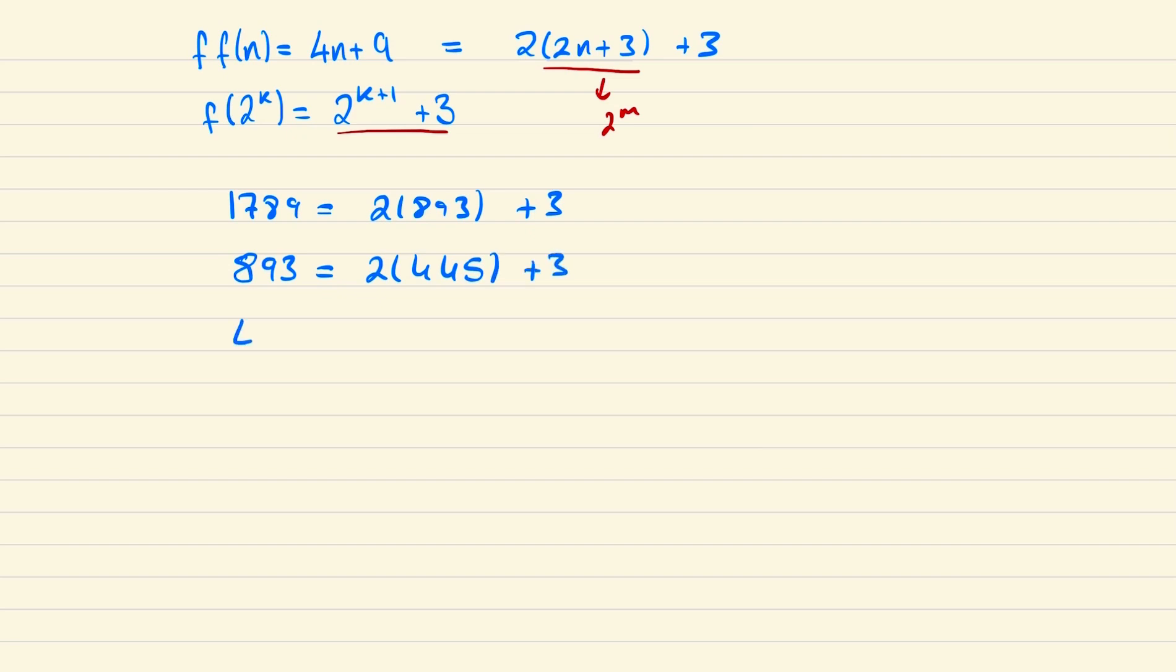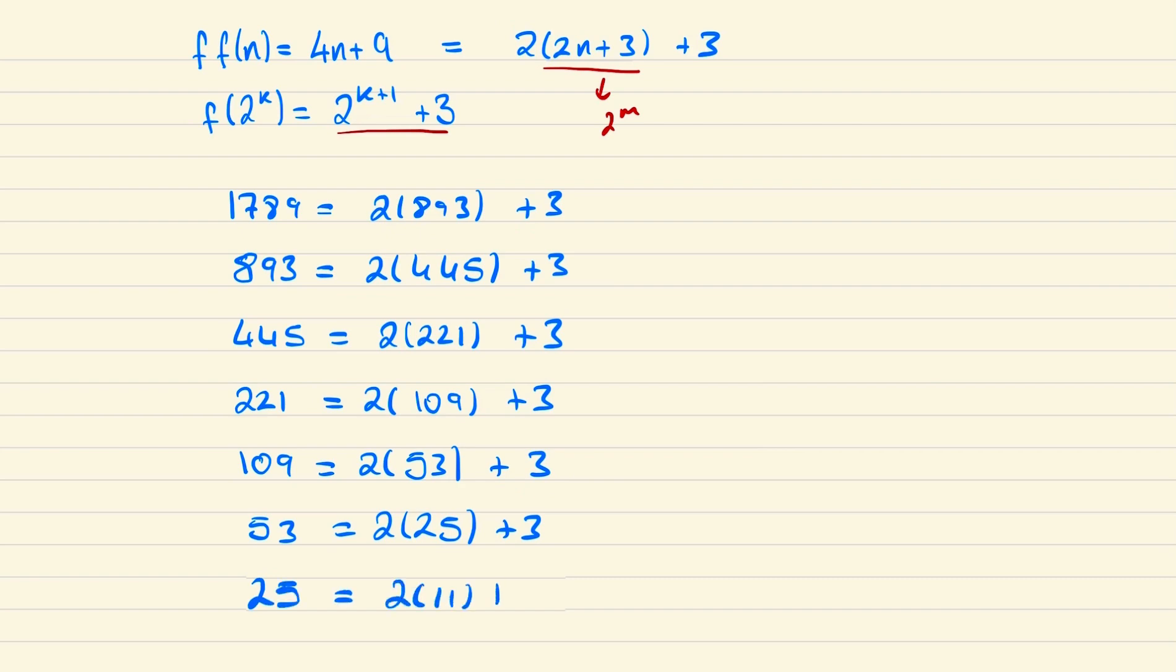And continuing our way downwards until we get 25 is 2 lots of 11 plus 3, and 11 is 2 lots of 4 add 3. Hence we can say that f(4) must equal 11.